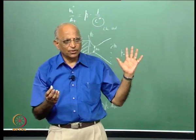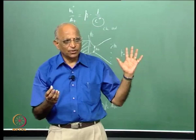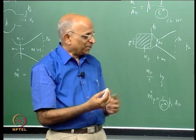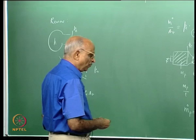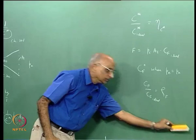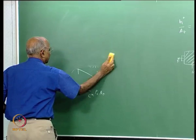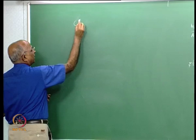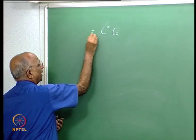A student asks: how do we compare combustion efficiency with C-star efficiency? The question is: why do we compare or combine C-star efficiency with thrust coefficient and call the product specific impulse?